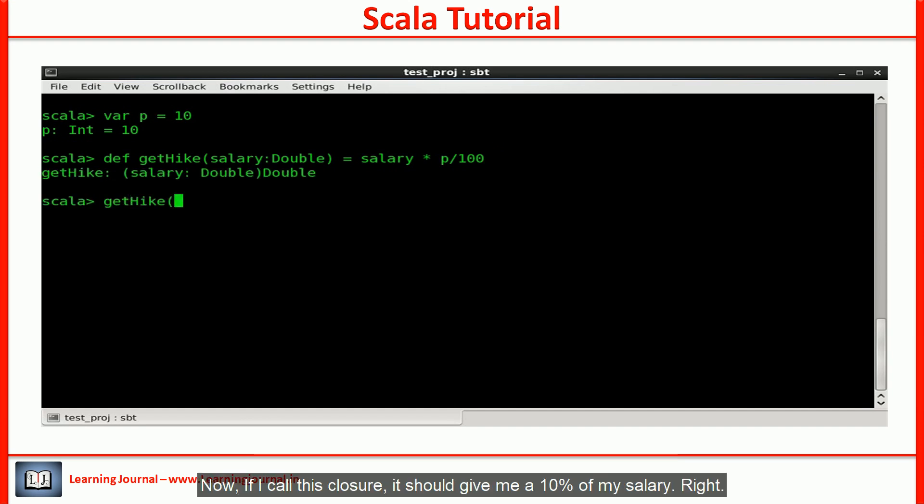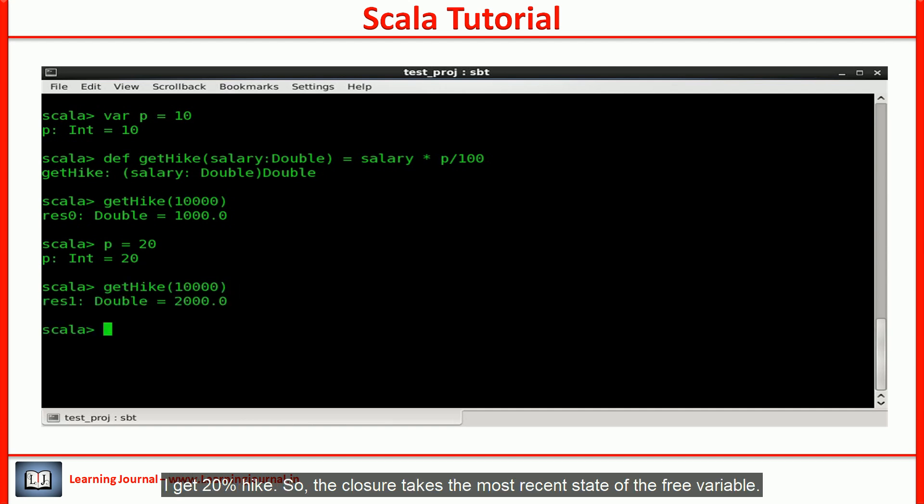Now, if I call this closure, it should give me 10% of my salary. Right? Let me change the value of p to 20 and call the closure once again. I get 20% hike. So, the closure takes the most recent state of the free variable.